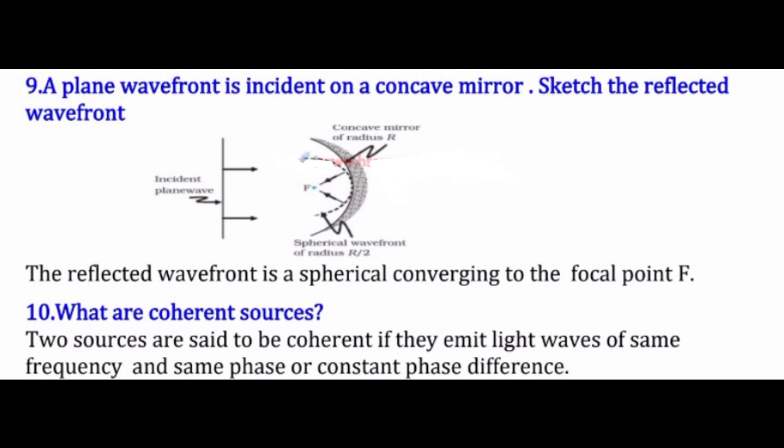The next question is: what are coherent sources? Two sources are said to be coherent if they emit light waves of the same frequency and same phase or constant phase difference.